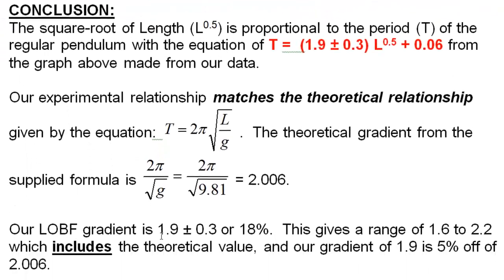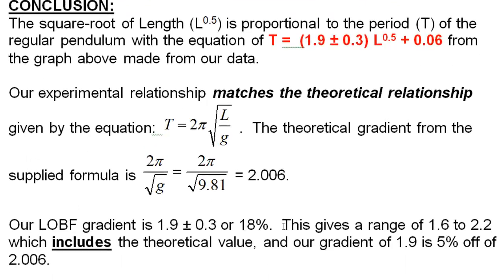This gives a range, instead of 1.9, you can say it gives a range of 1.6 to 2.2. You find that by adding and subtracting your uncertainty to the number. You can say if that includes your theoretical, which was 2.06. And you can also even go and say our gradient of 1.9 is only 5% off of the expected value. You get this 5% by subtracting the theoretical, the experimental, and then dividing that by the theoretical. Some people consider this last part optional, but it can be really helpful. So we're using uncertainties to compare our results to the theoretical expected results.